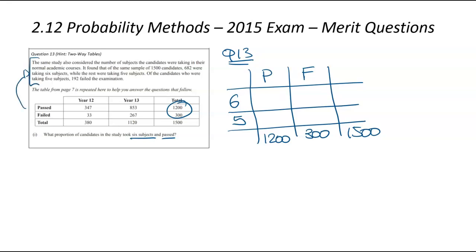So we've got what we can from the table. We're now going to jump back to the wordy part to see what else we can populate. We found out that 682 were taking six subjects, so this is going to be 682. That gives us enough information to find out how many people are taking five subjects, which is 818. Of the candidates taking five subjects, we know 192 of them failed the exam. That is actually enough to work backwards to find everything else. This here is 108, which is 300 minus 192. This here is 574, which is 682 minus 108. And then finally, this number here is 626, which is 1,200 minus 574.